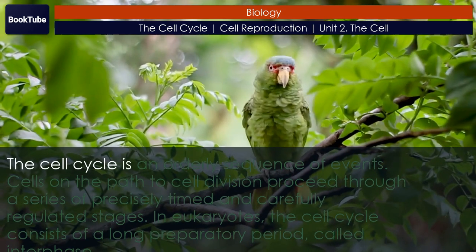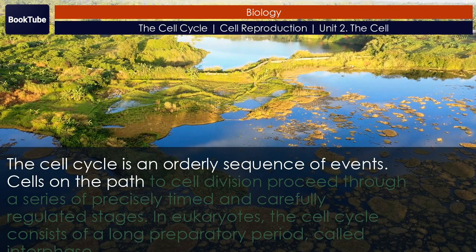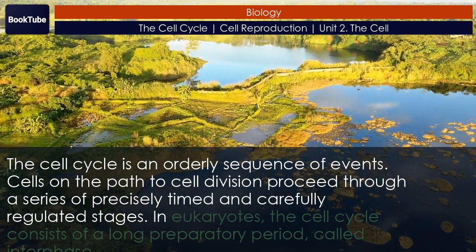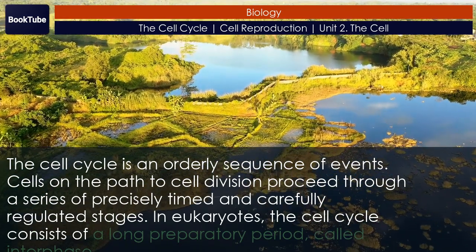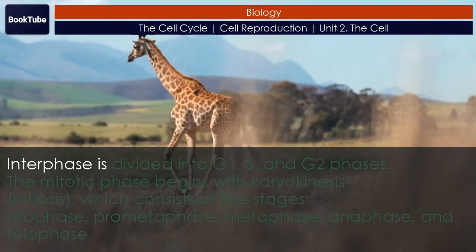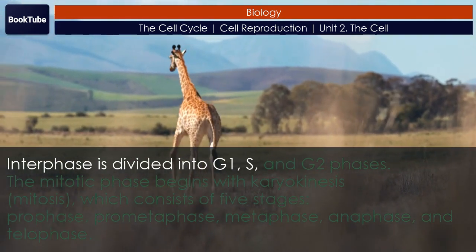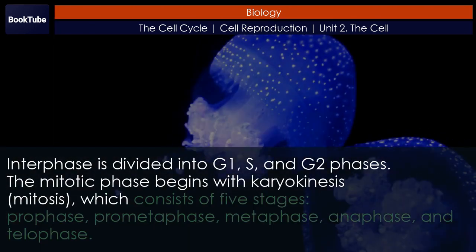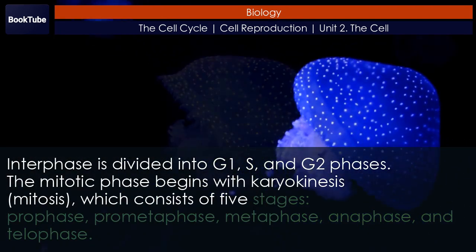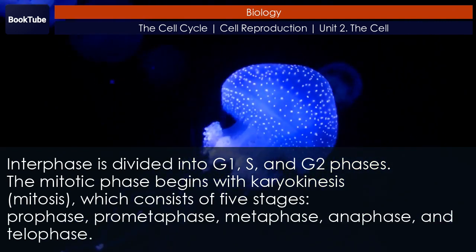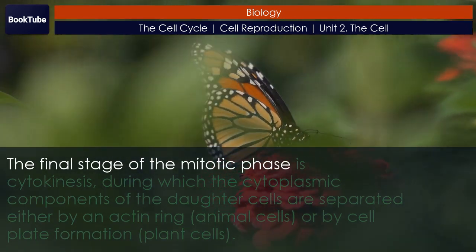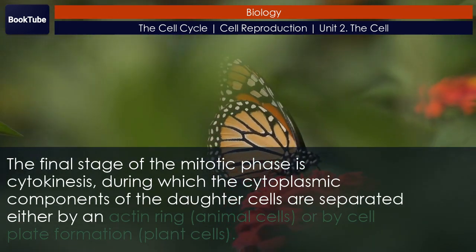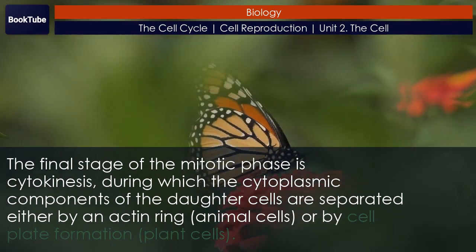Section Summary. The cell cycle is an orderly sequence of events. Cells on the path to cell division proceed through a series of precisely timed and carefully regulated stages. In eukaryotes, the cell cycle consists of a long preparatory period called interphase, which is divided into G1, S, and G2 phases. The mitotic phase begins with karyokinesis, or mitosis, which consists of five stages: prophase, prometaphase, metaphase, anaphase, and telophase. The final stage of the mitotic phase is cytokinesis, during which the cytoplasmic components of the daughter cells are separated either by an actin ring in animal cells, or by cell plate formation in plant cells.